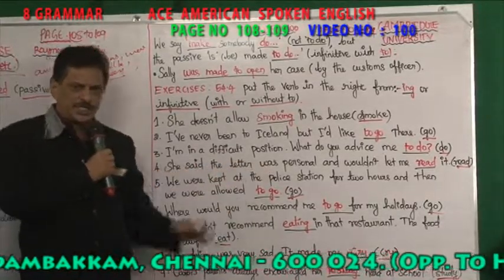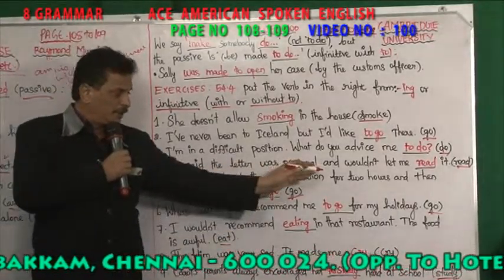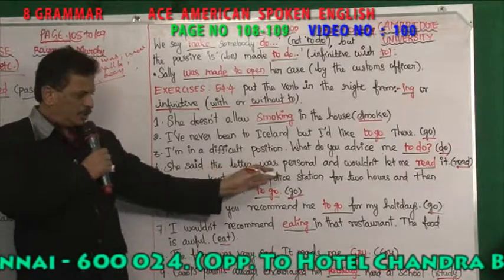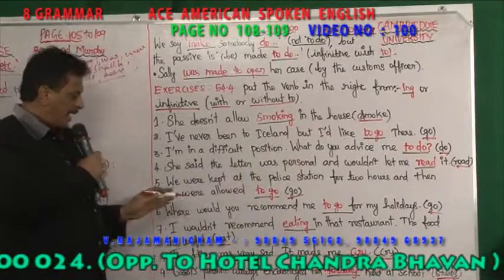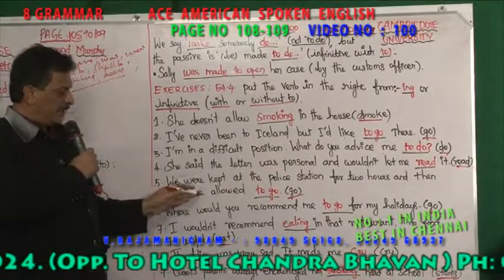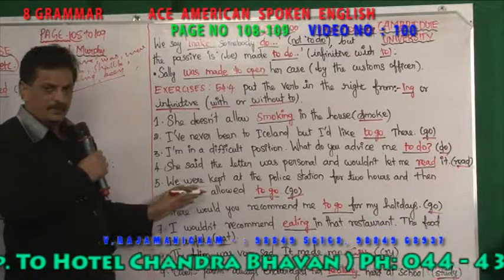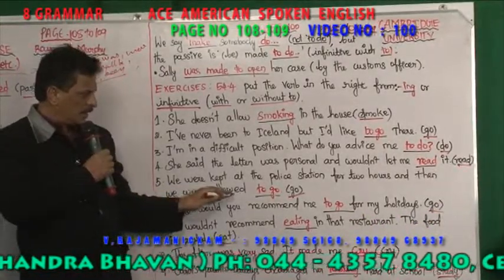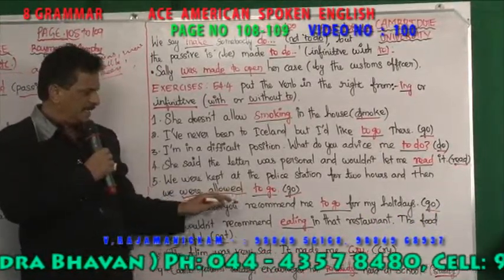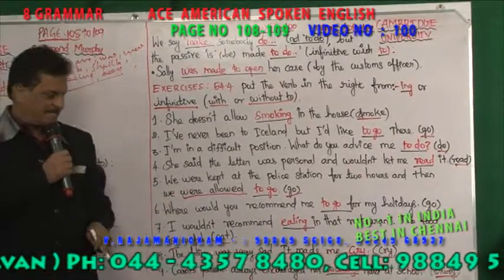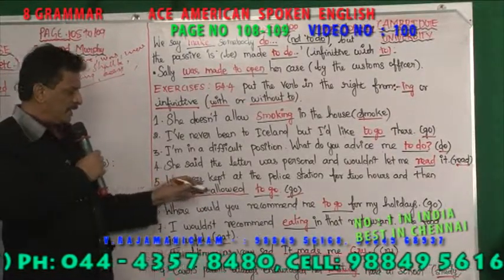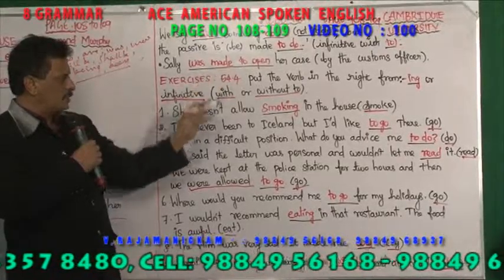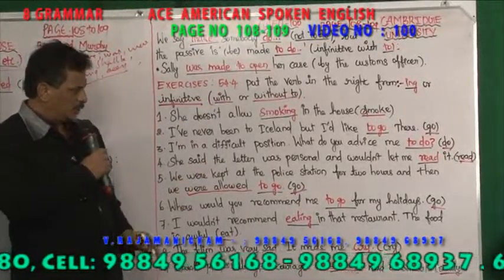'We were kept at the police station for two hours and then we were allowed to go.' 'Were allowed' is passive — BE plus past participle. Just like 'was made to open', here it is 'were allowed to go'. It is a passive sentence.